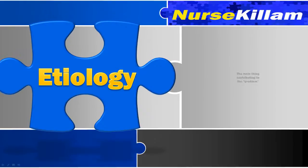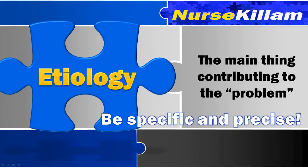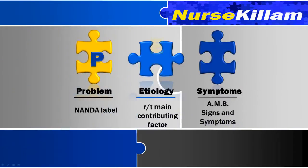The etiology identifies the factors that are causing the problem. For actual nursing diagnoses, the etiology identifies the main contributing factors. With potential diagnoses, risk factors are used as the etiology. This etiology should help to individualize care for your client. The etiology needs to be as specific and precise as possible. Do not write this section vaguely, hoping that the symptoms section will explain what is going on with your patient. Write your problem and etiology as specific as possible before adding the signs and symptoms to the end.